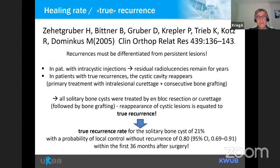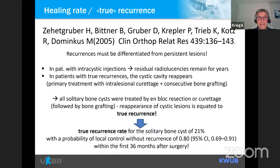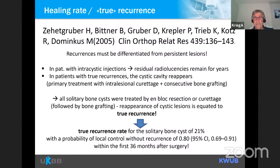Thinking about true recurrence, a study from the Vienna group found the real recurrence rate after surgical treatment. They defined true recurrence as the reappearance of cyst after complete curettage. They confirmed a true recurrence rate for solitary bone cyst after curettage and consecutive bone grafting of over 20% within the first 36 months after surgery.